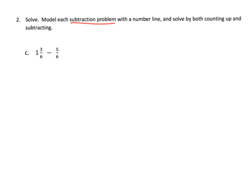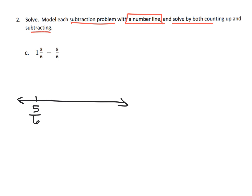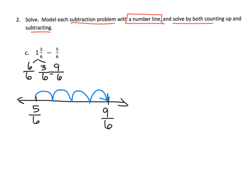Now we're going to model each subtraction problem with a number line and solve both by counting up and by subtracting — same as before, only the problem is a bit more complicated. Starting by counting up: we start at 5 sixths and count up. We can think of 1 and 3 sixths as 6 sixths plus 3 sixths, which is 9 sixths. How many steps to go from 5 sixths to 9 sixths? It's 6 sixths, 7 sixths, 8 sixths, 9 sixths — so 4 steps, giving us 4 sixths.